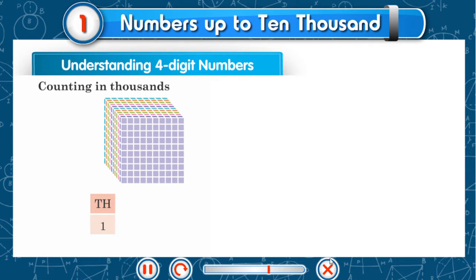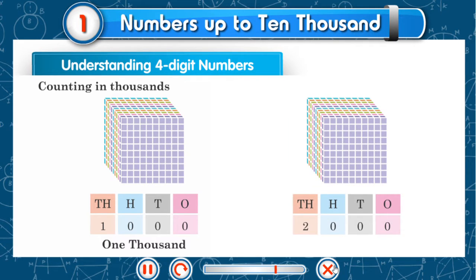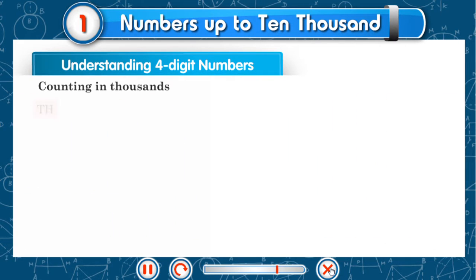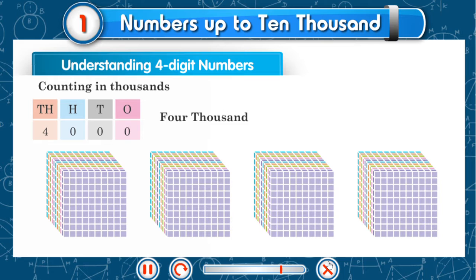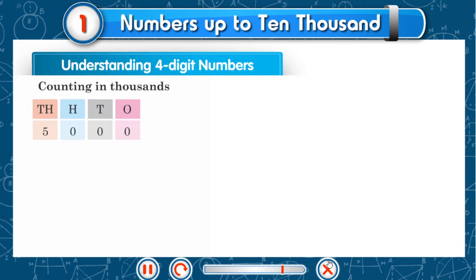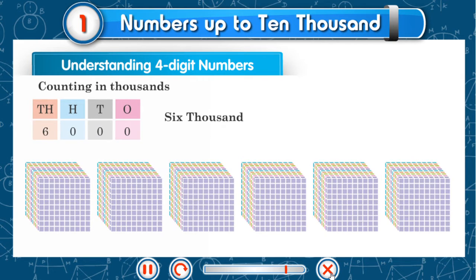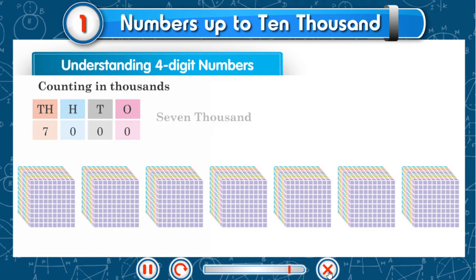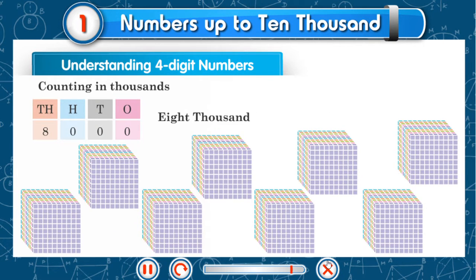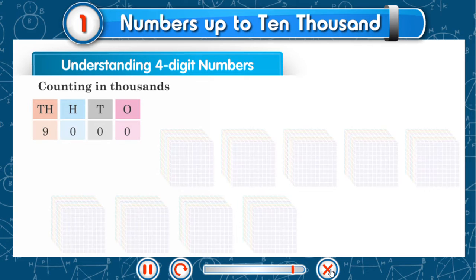Th 1, H 0, T 0, O 0: 1,000. Th 2: 2,000. Th 3: 3,000. Th 4: 4,000. Th 5: 5,000. Th 6: 6,000. Th 7: 7,000. Th 8: 8,000. Th 9: 9,000.